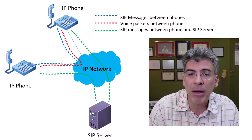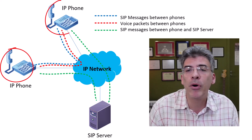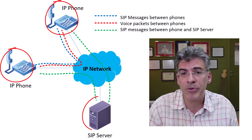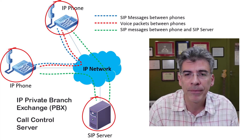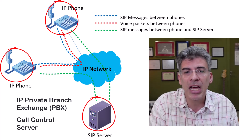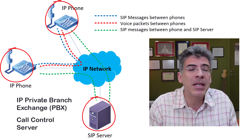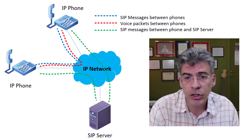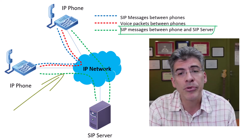Take a look at this diagram for a clearer understanding of how this works. Let's say we have two IP phones connected to an enterprise network. These phones register to what is known as a SIP server — sometimes called an IP PBX or a call control server. This is the server that provides the voice service to the IP phone, and it could be on a local network or hosted somewhere on the internet.